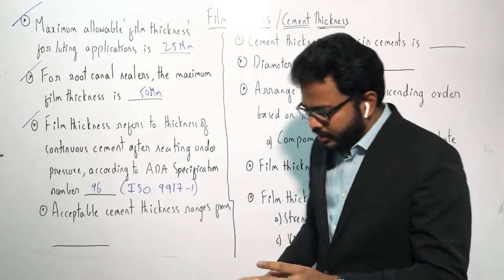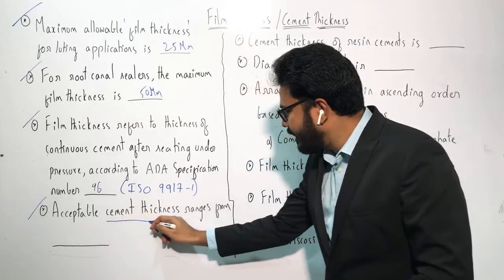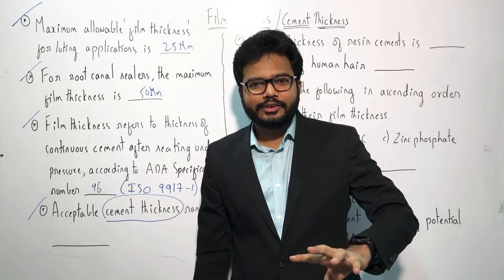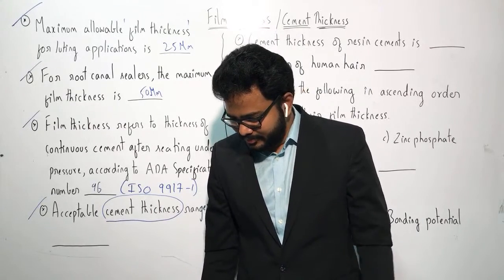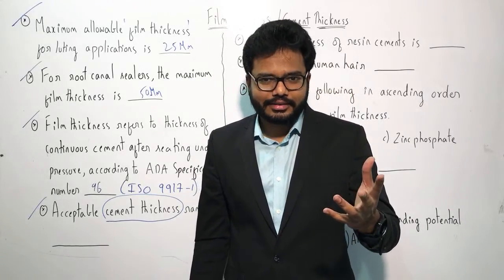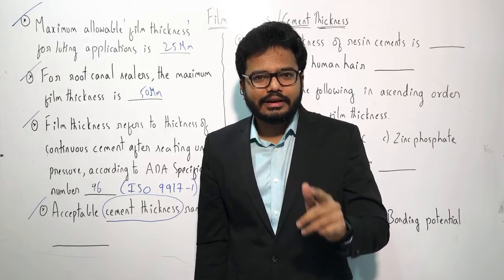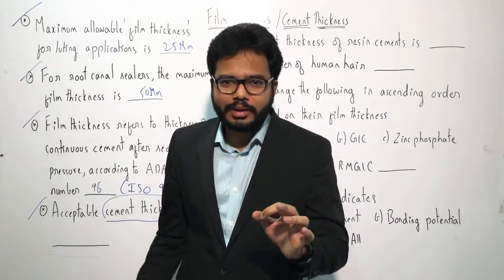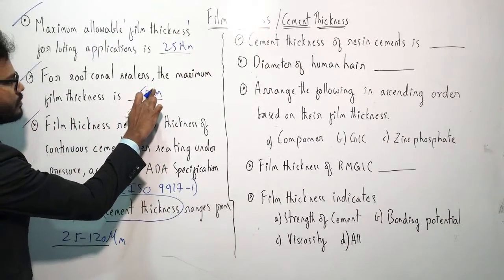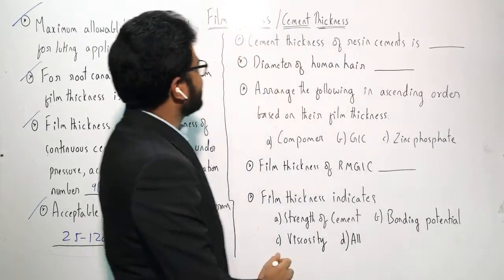Now we shift to cement thickness. Acceptable cement thickness ranges from 25 to 120 microns. Note the difference — we were discussing film thickness before, and now we're talking about cement thickness, which has this range of 25 to 120 microns.